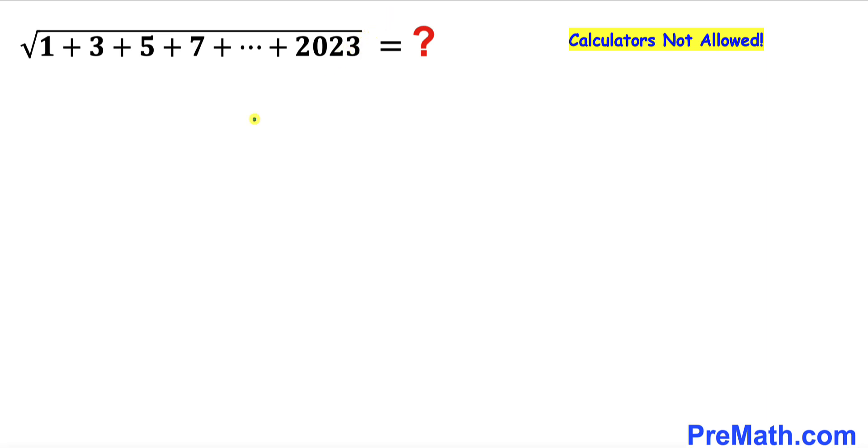Here's our problem: the square root of the sum of all these consecutive odd numbers, 1 + 3 + 5 + 7, all the way to 2023, and we are not supposed to be using calculators of any kind.